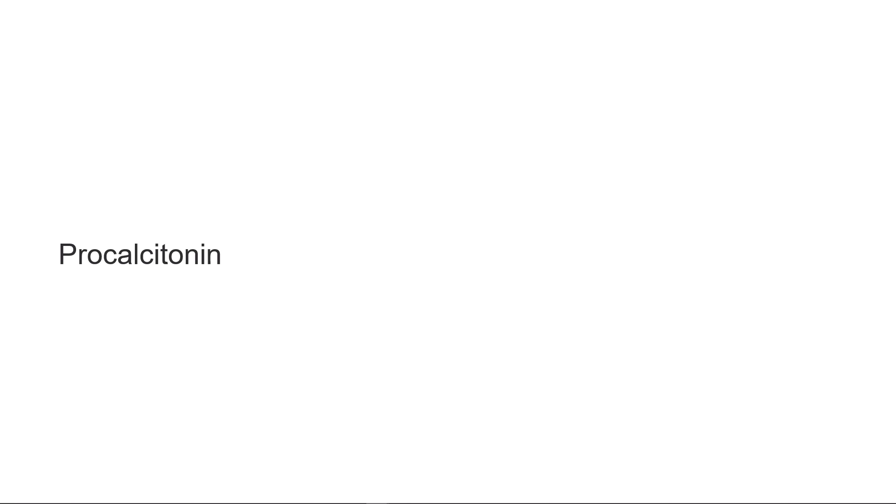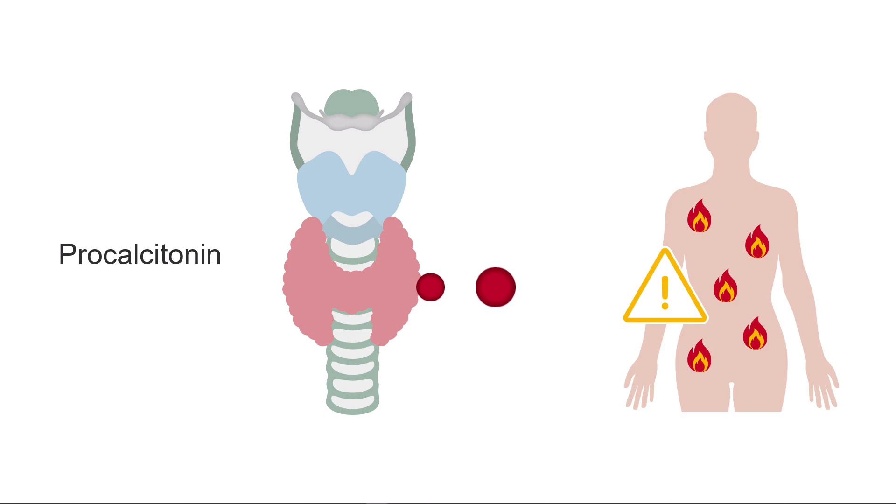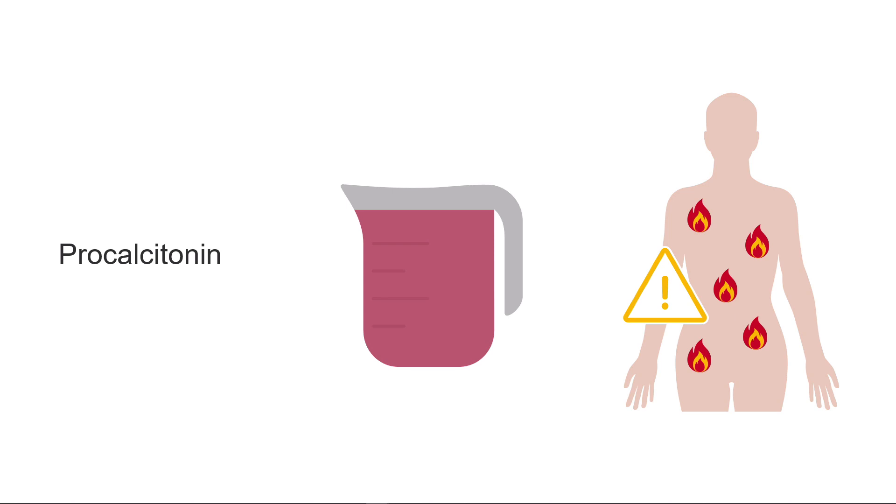To help aid with our diagnosis, I suggest the use of procalcitonin. It's a protein produced at very low levels by the thyroid for the regulation of calcium. In response to severe systemic inflammation, procalcitonin levels rise dramatically. There is also additional production of procalcitonin in other tissues, like the liver.